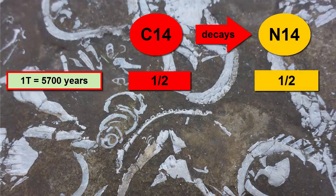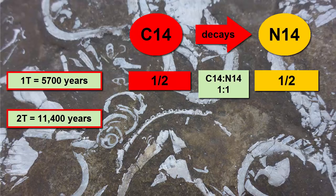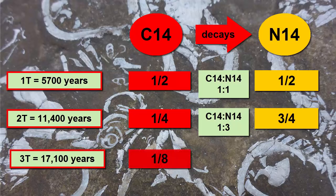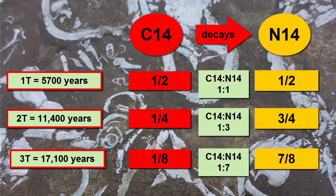After one half-life, assuming there was no nitrogen-14 to begin with in a rock sample, the ratio of the two should be 1 to 1 — equal. After two half-lives, the half that remained of parent after the first half-life is now halved again; half of a half is a quarter. The remaining three quarters is daughter, and the ratio of parent to daughter is 1 to 3. Another half-life, and we halve the quarter — there's now one-eighth parent and seven-eighths daughter, and the ratio is 1 to 7, and so on.